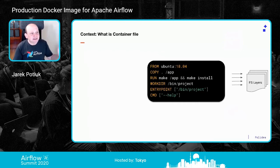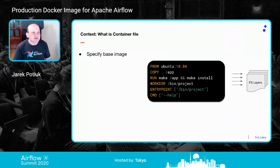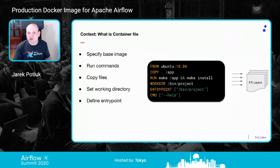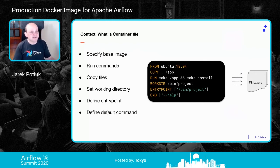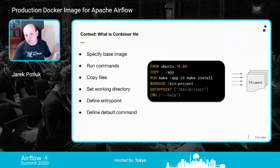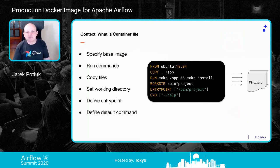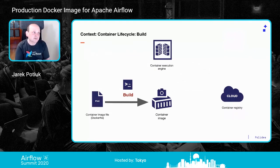A container file is a list of instructions for how to build the file system of a container image. You take a base image, run some commands, copy some files, set a working directory, define an entry point — the script or binary that runs when you enter the container. Using tools like Docker or Podman, you build the binary image from this container file. That's basically what a container file is.